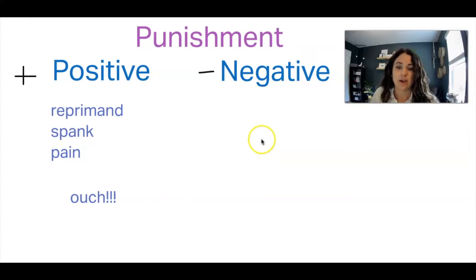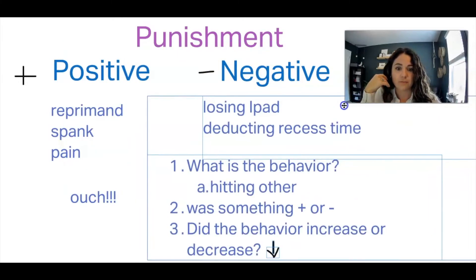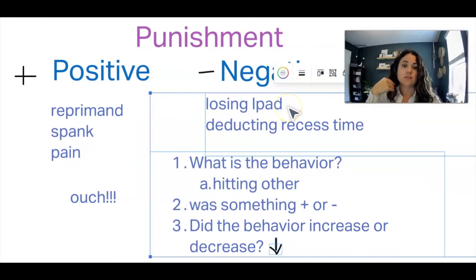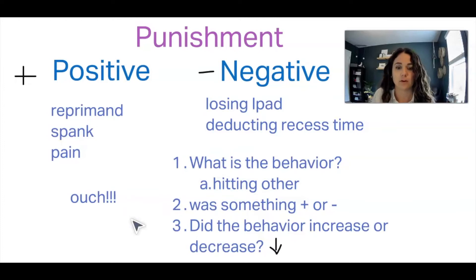For negative punishment, an example would be losing iPad time or having recess time deducted. These are things we want but are not getting — they're being taken away. So in the future that behavior is punished.